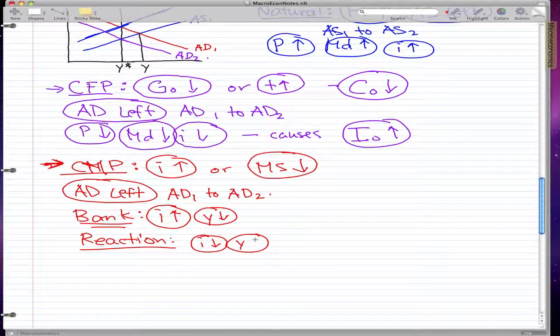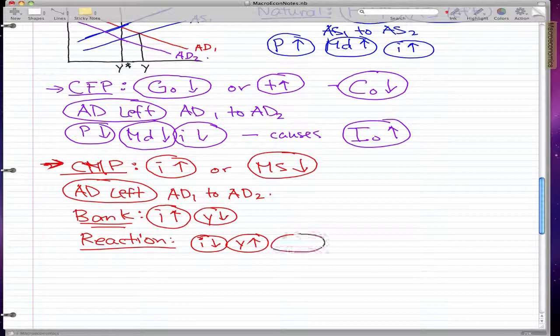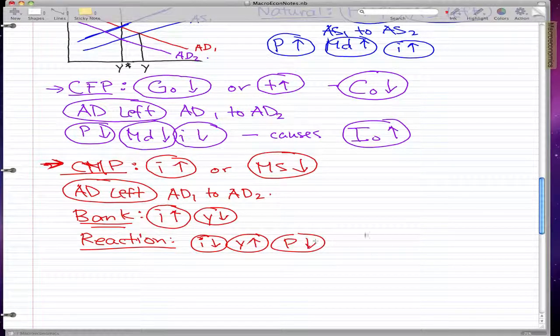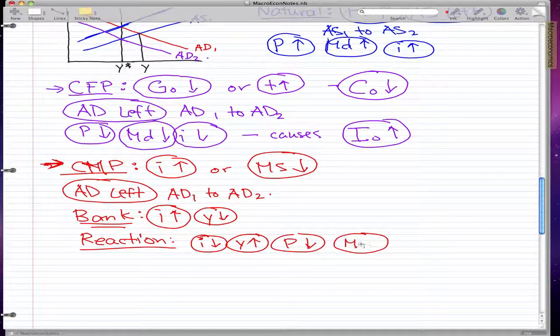We know this because, pretty much, the reaction is always the opposite of bank. So interest decreases and Y increases, and we know that when interest decreases, two other things also decrease: price and money demand.